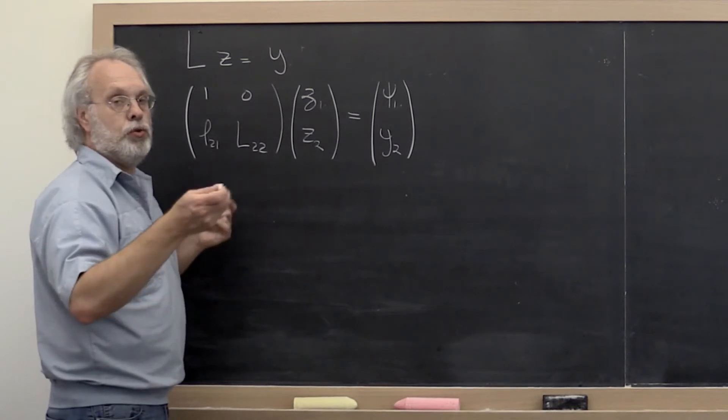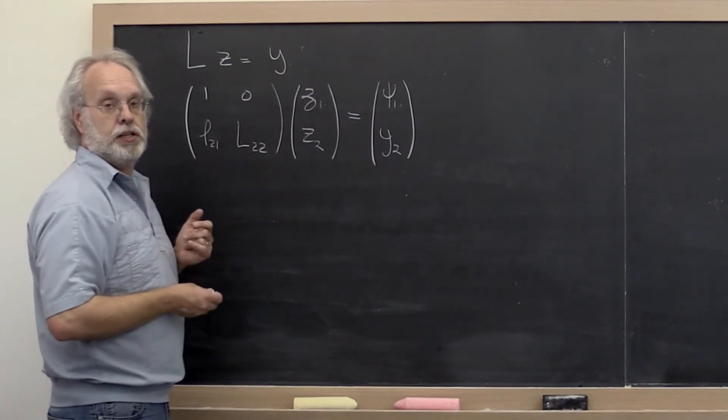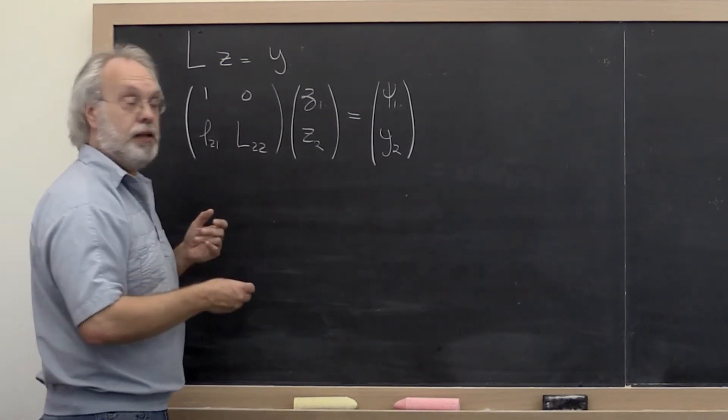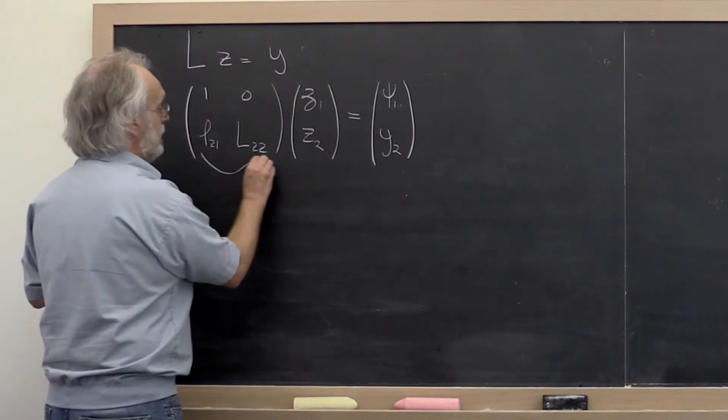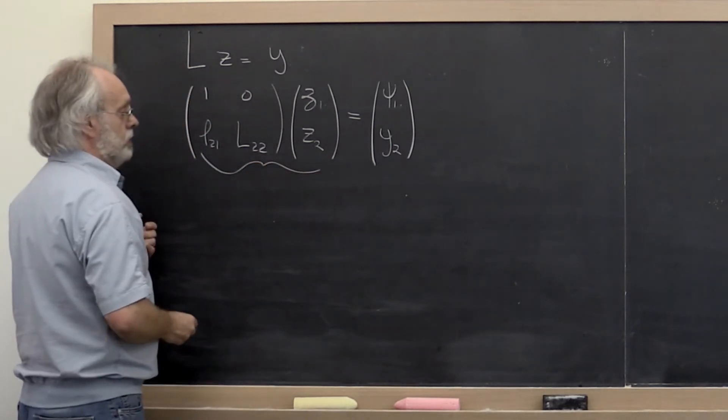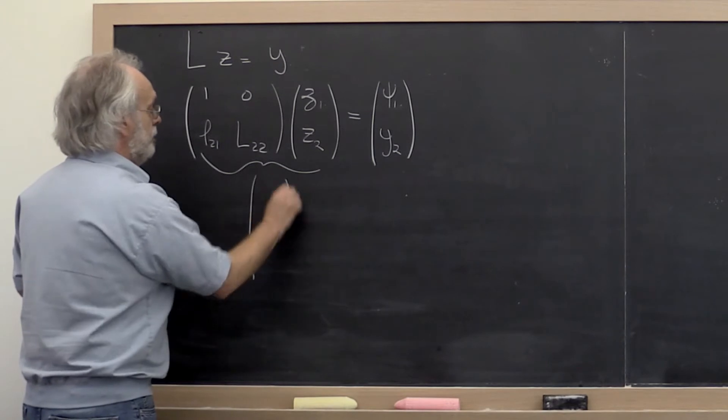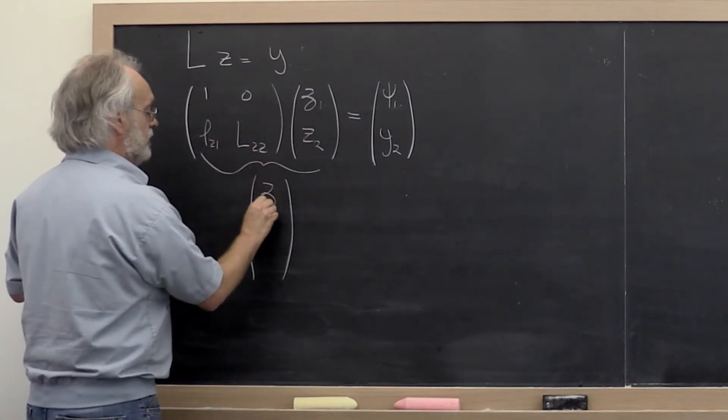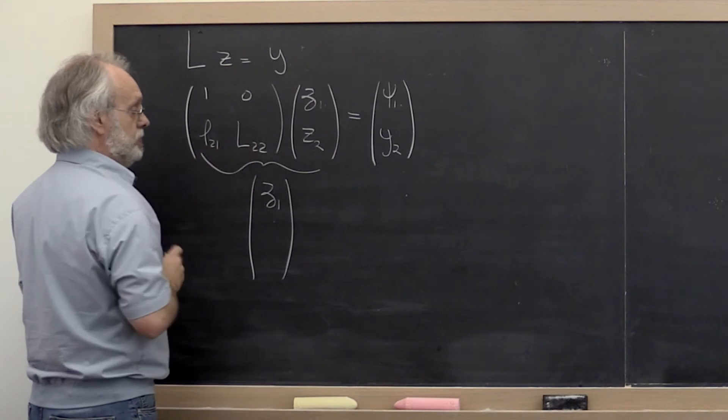What do we often do next once we have done a partitioning like that? Well, we multiply things out. So let's take this right here and let's multiply it out. Well, that gives us the vector 1 times zeta_1. That's just zeta_1 plus 0 times z_2.